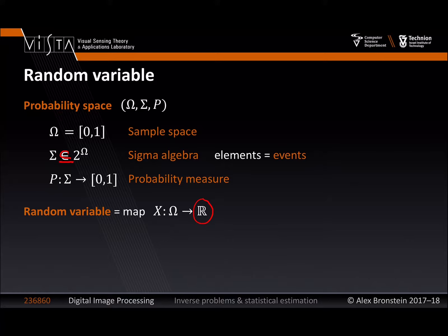For example, if we would like to think of a vector-valued random object, we take a map from Ω to ℝ^d. Once we fix ω to some ω₀, we get a vector. By taking different values of ω, we can realize different realizations of that mathematical object, and we can use P to measure the probability of that realization happening. What I would like to do next is take another object — a function, a signal — and add to it an element of randomness.